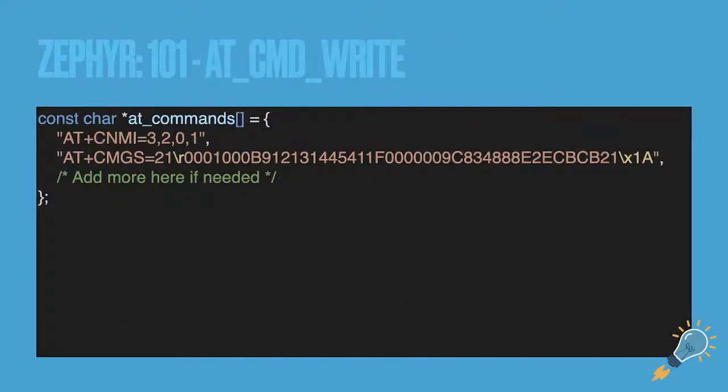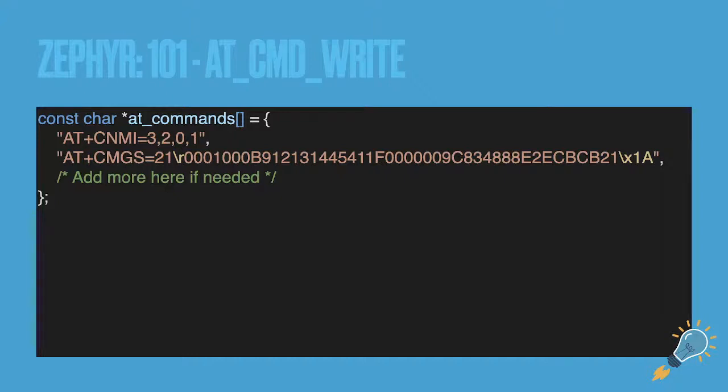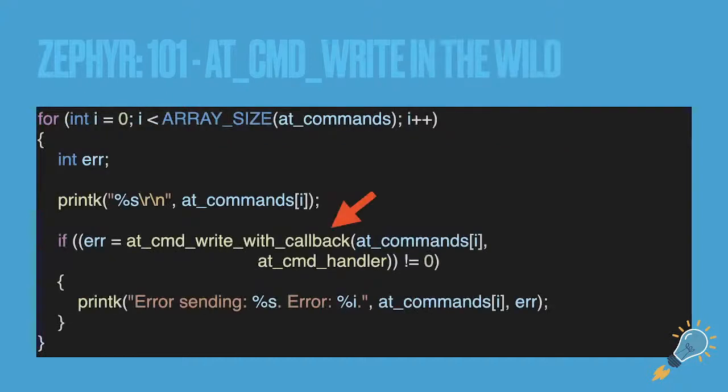So here is an example of actually using that library, that lower level library to write some commands. This in particular is a couple of commands to actually send an SMS message in the SMS sample, which I've also included in the description. So you can go to it on GitHub and just check out the commands that are being used there in more context. But you can see we're iterating over those commands and writing them with the AT command write with callback.